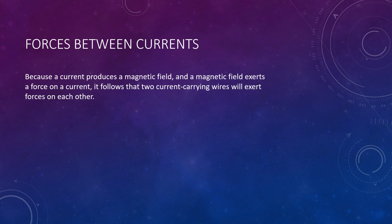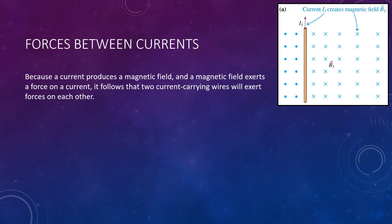Many of us are visual learners, so let's take this step by step with some photos. Imagine a single wire producing a magnetic field in the region around it, as you see on the top right. There you see a wire with the current going upward. By the right-hand rule for fields, if you curl your fingers around the wire, we have a field going into the page on the right and coming out of the page on the left.